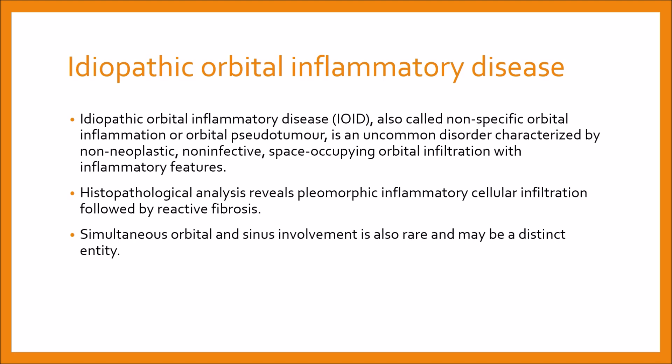Unilateral disease is typical in adults, although children might have bilateral involvement. Intracranial extension is rare. Simultaneous orbital and sinus involvement is also rare and may be a distinct entity.